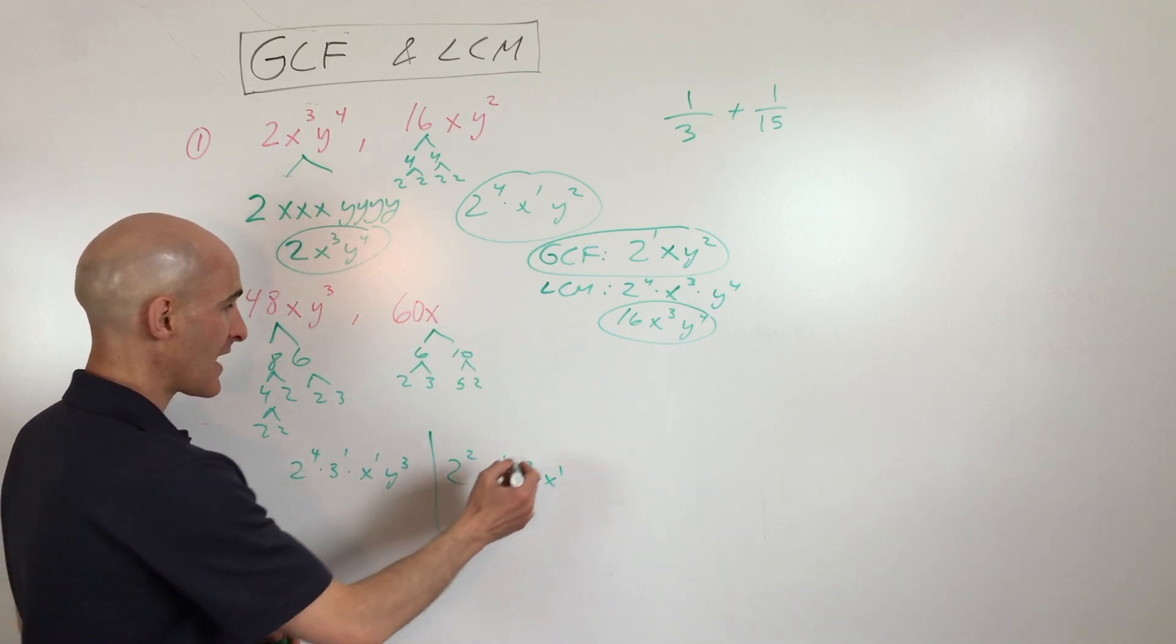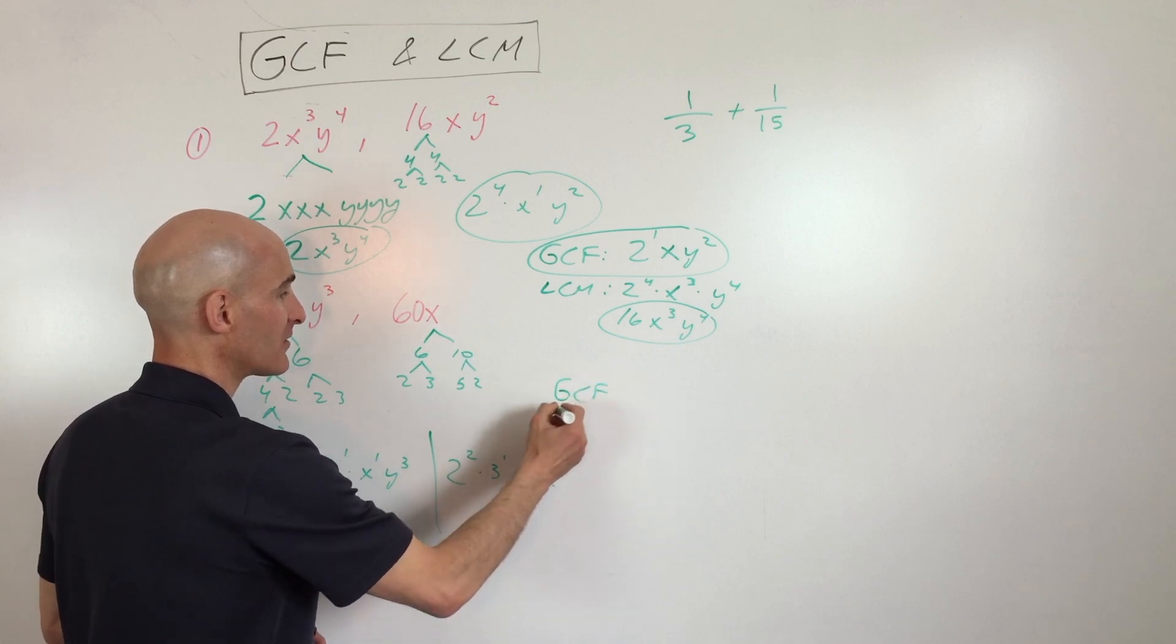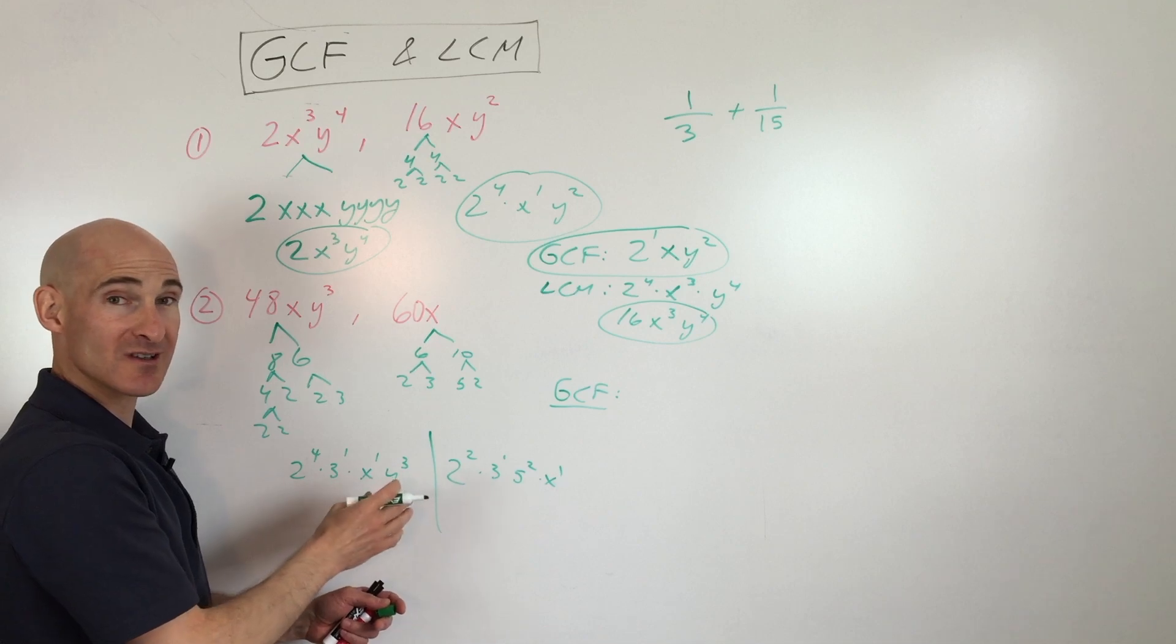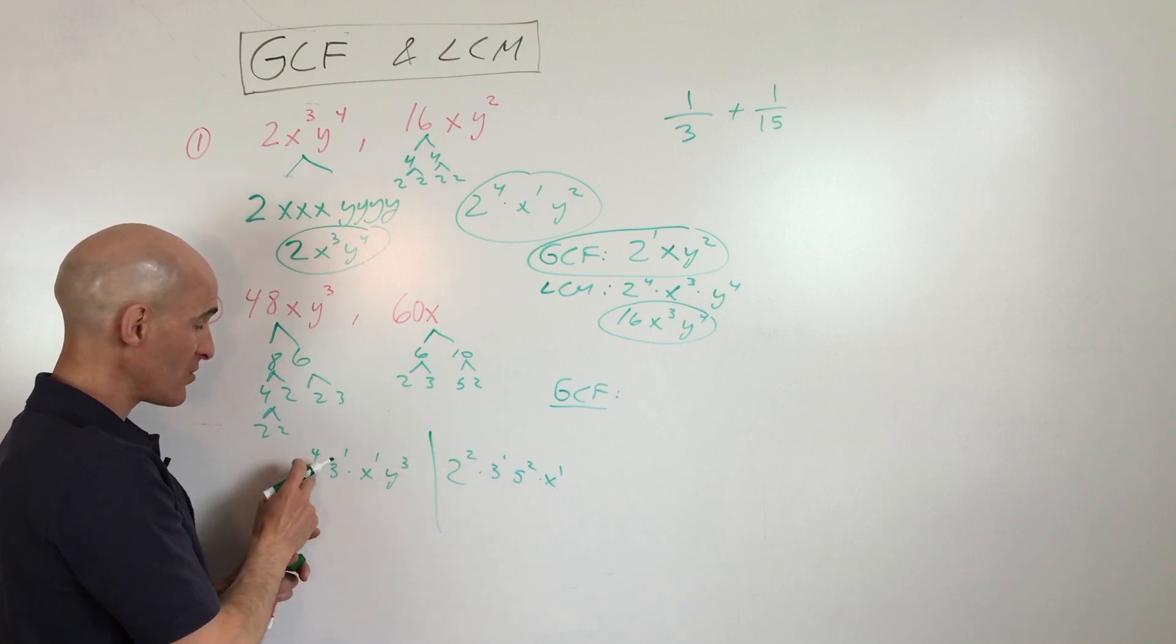So if we want to find the greatest common factor, the GCF. So greatest common factor, we have to take whatever occurs less. We've got 2 twos here, 4 twos here.